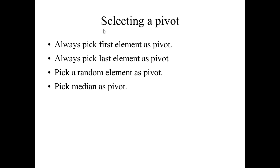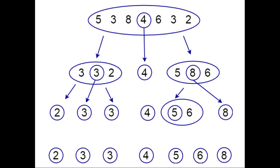To summarize pivot selection: you can choose the first element, the last element, the median element, or the random element. Once a pivot is selected, we arrange the elements — smaller elements go to the left side and larger elements go to the right side.